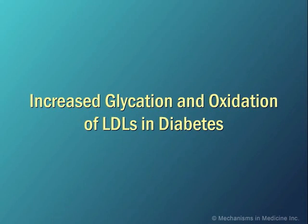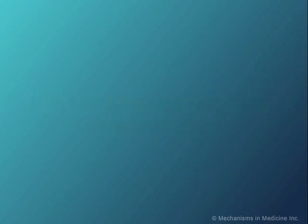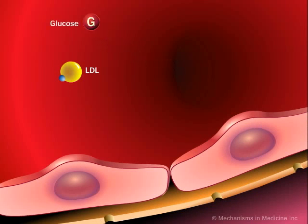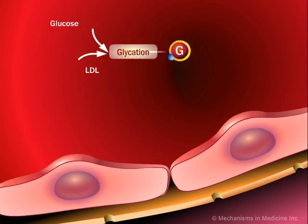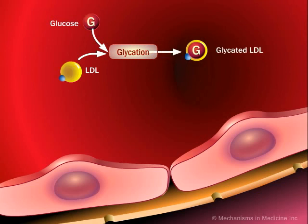In the diabetic environment, low-density lipoproteins are typically exposed to high levels of circulating glucose. From this exposure, these low-density lipoproteins become glycated — that is, a molecule of glucose becomes attached to them.